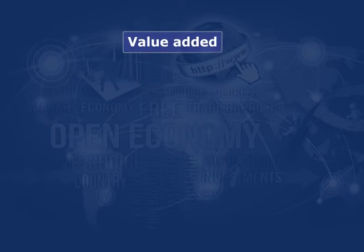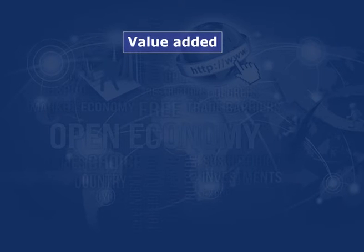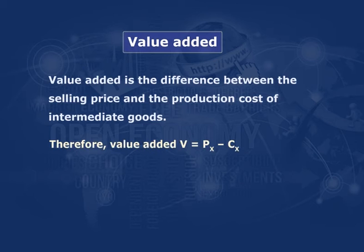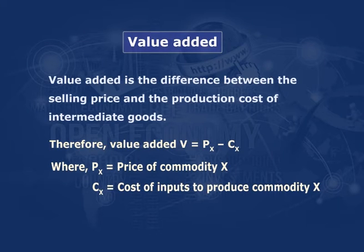To understand the concept of effective rate of protection, we need to understand the meaning of value added. Value added is the difference between the selling price and the production cost of intermediate goods. Therefore, value added V is equal to Px minus Cx, where Px is the price of commodity X and Cx is the cost of inputs to produce commodity X.